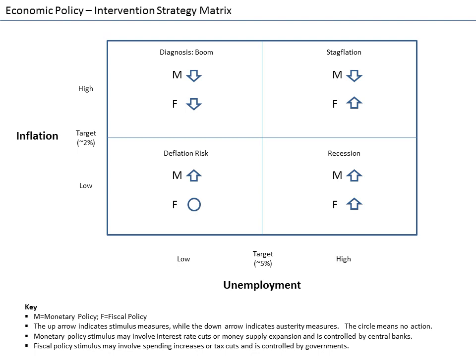By the 1950s, most economists had accepted the synthesis view of the macroeconomy. Economists like Paul Samuelson, Franco Modigliani, James Tobin, and Robert Solow developed formal Keynesian models and contributed formal theories of consumption, investment, and money demand that fleshed out the Keynesian framework.